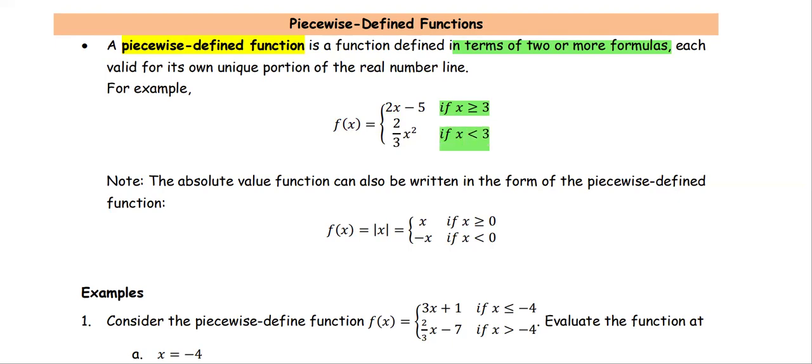When you look at the real number line at 3, on the right side the function will go with f equals 2x minus 5, and on the left side the function will go with f equals 2 over 3x squared. When you plot the graph of the piecewise function, the left side of 3 goes with the graph of 2 thirds x squared, and the right side of x equals 3, the graph will be the graph of 2x minus 5.